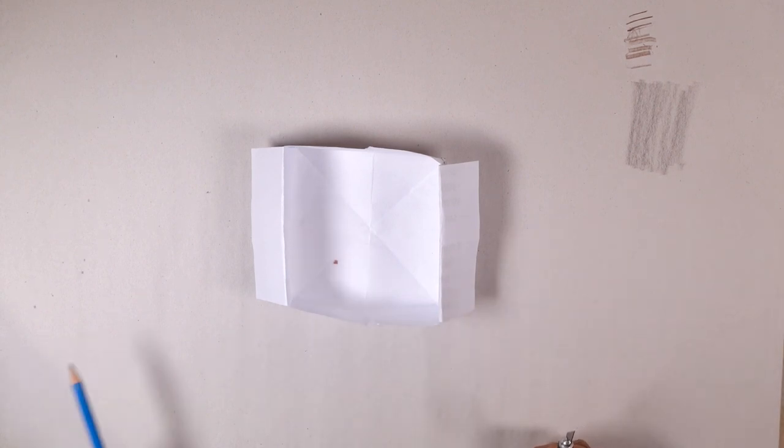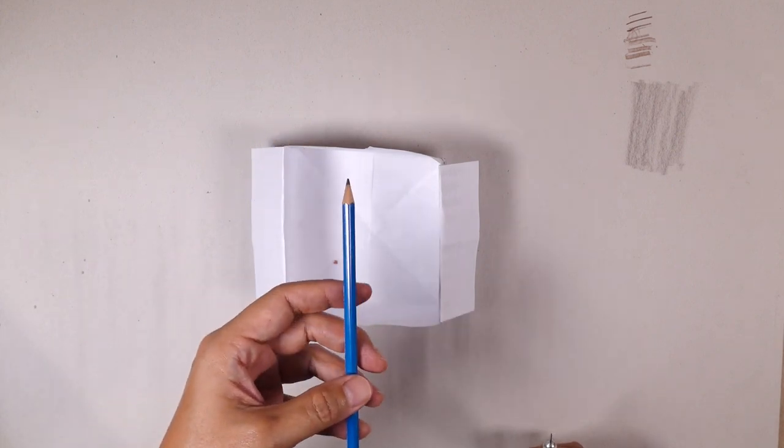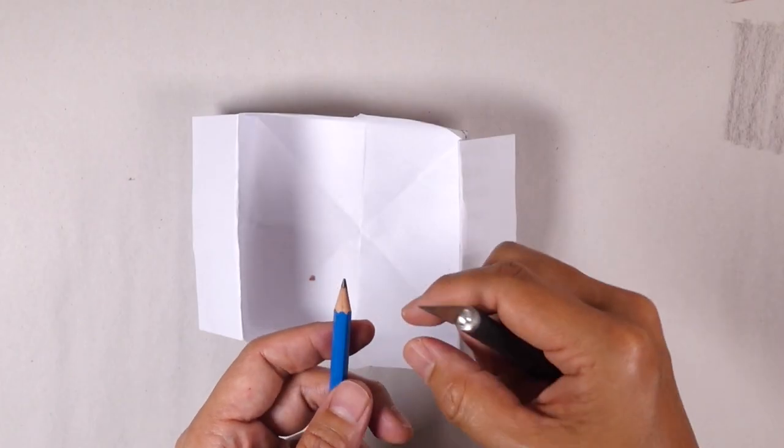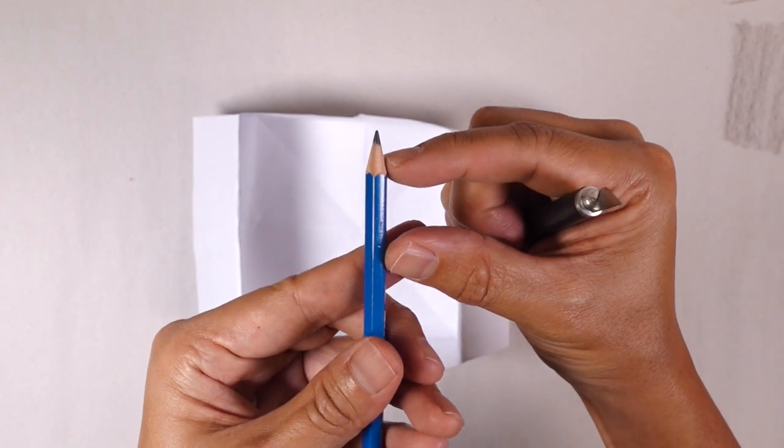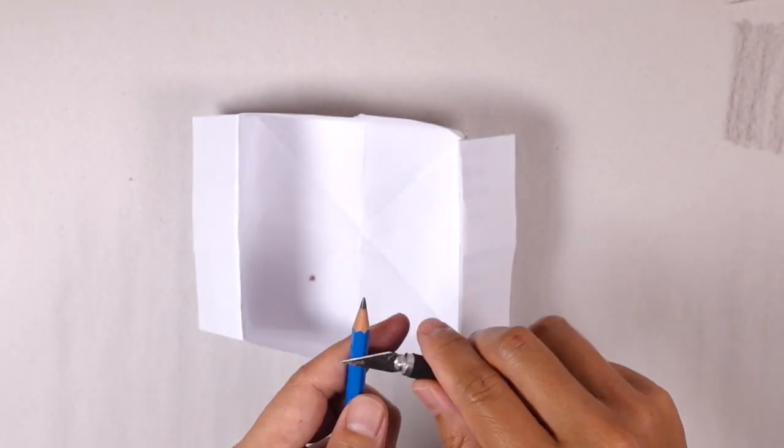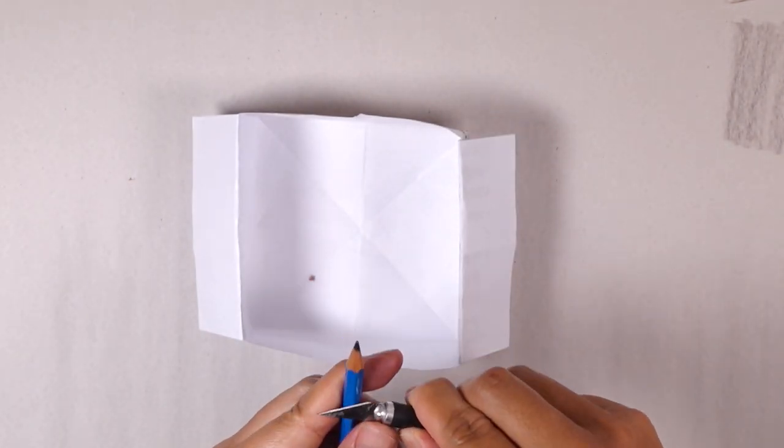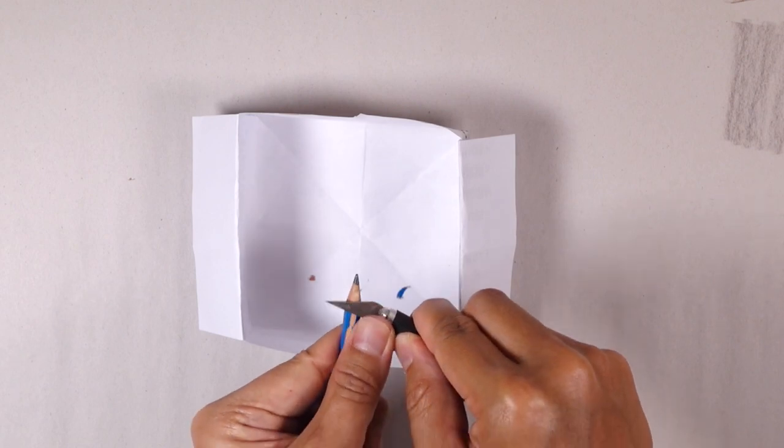Let's do this on a 4B pencil. So what I'll do is to shave out this amount of wood to expose the lead and I'm gonna do it in this manner.